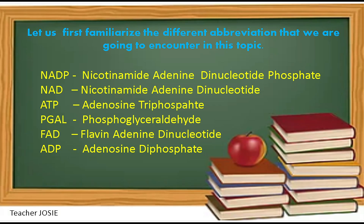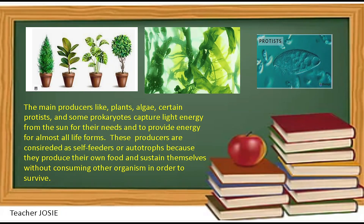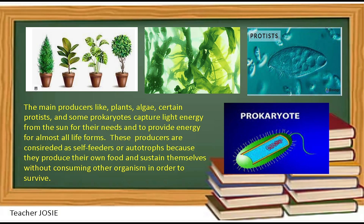ATP means adenosine triphosphate. The main producers like plants, algae, certain protists, and some prokaryotes capture light energy from the sun for their needs and to provide energy for almost all life. These producers are considered as self-feeders or autotrophs because they produce their own food and sustain themselves without consuming other organisms in order to survive.